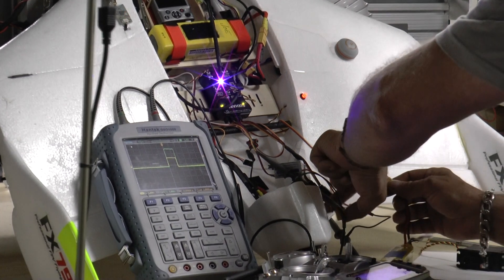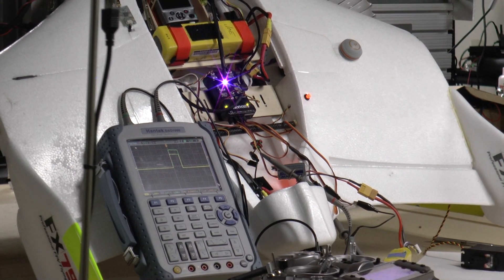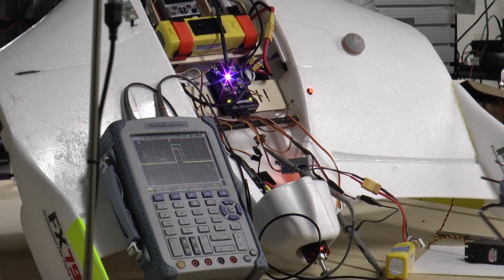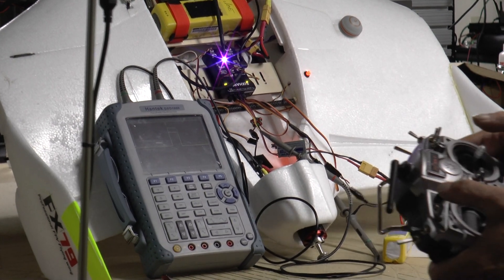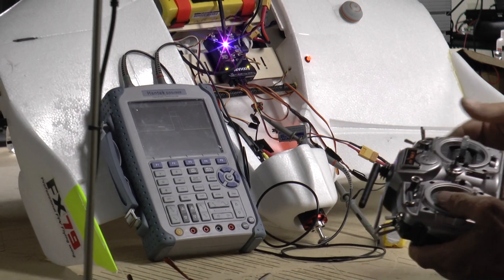So if I apply power again from the BEC, you can see now I have control, and I can change my control surfaces.